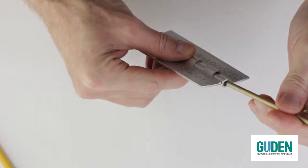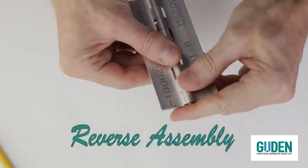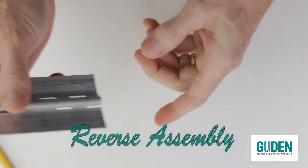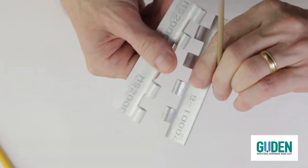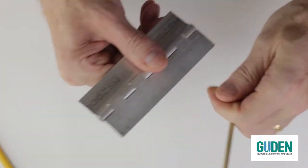Another special case is called reverse assembly. That's where a hinge starts out looking like this - we knock the pin out, turn one leaf around, and stick the pin back in.